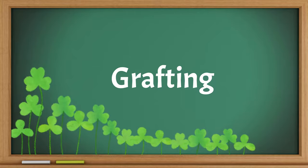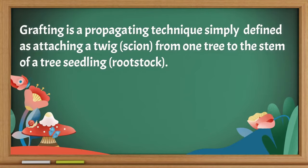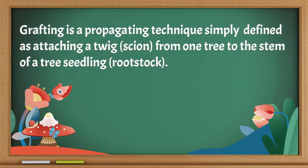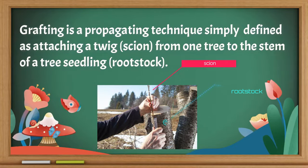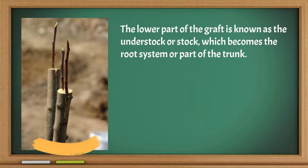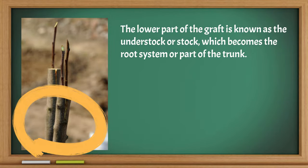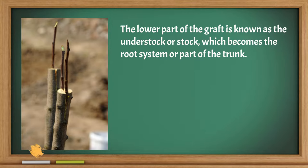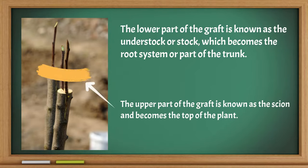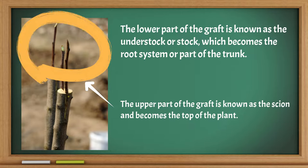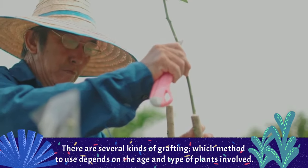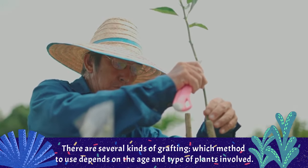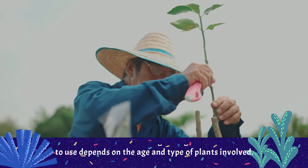Grafting. Grafting is a propagating technique defined as attaching a twig or scion from one tree to the stem of a tree seedling or rootstock. The lower part of the graft is known as the understock or stock, which becomes the root system or part of the trunk. The upper part is known as the scion and becomes the top of the plant. There are several kinds of grafting, and which method to use depends on the age and type of plant involved.